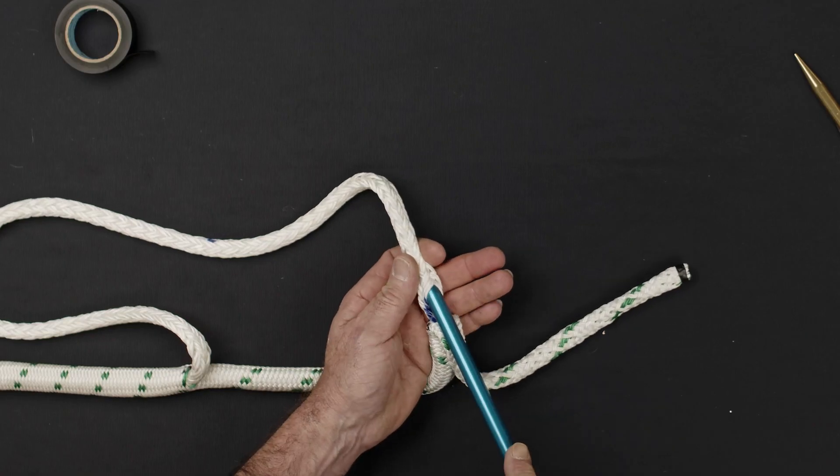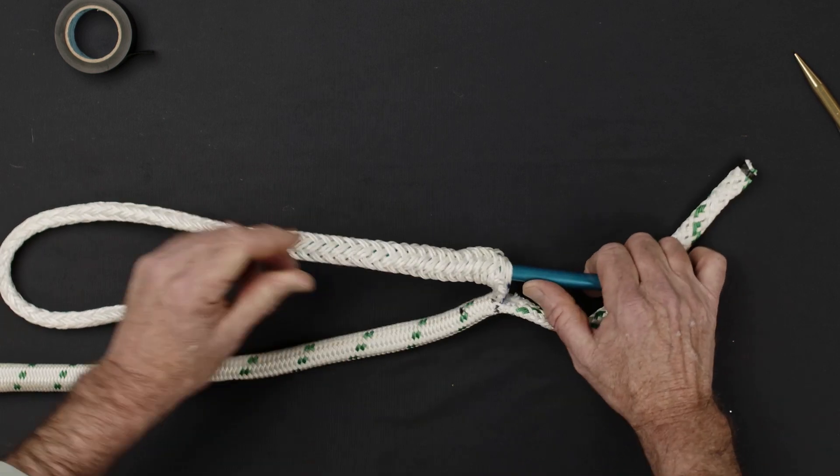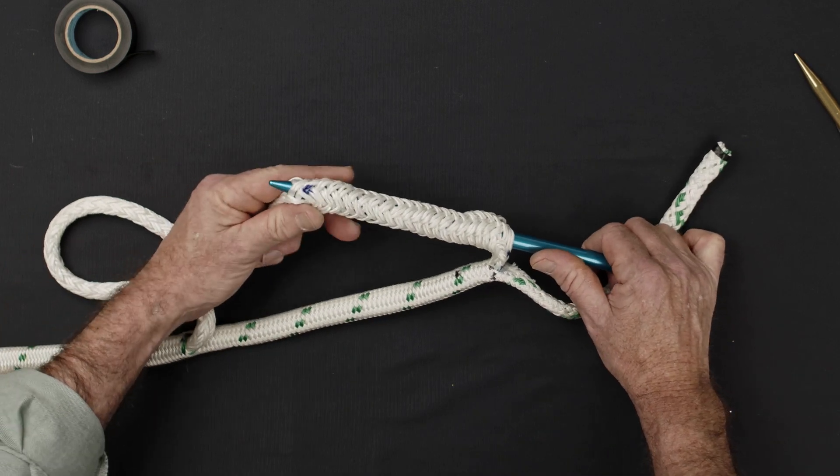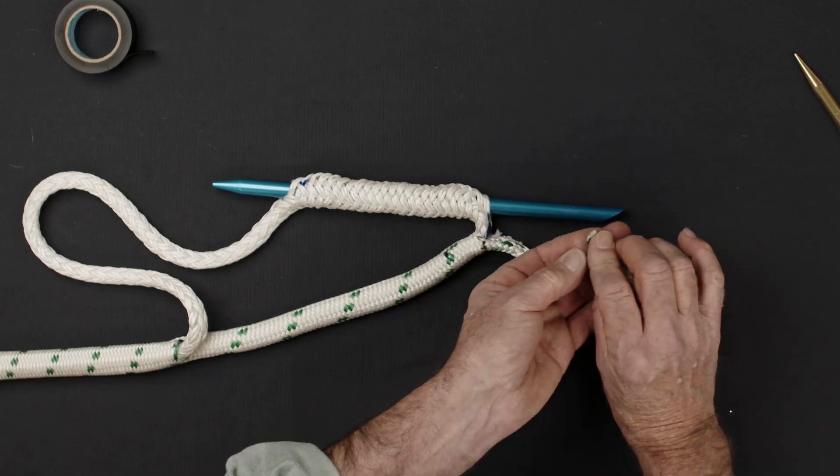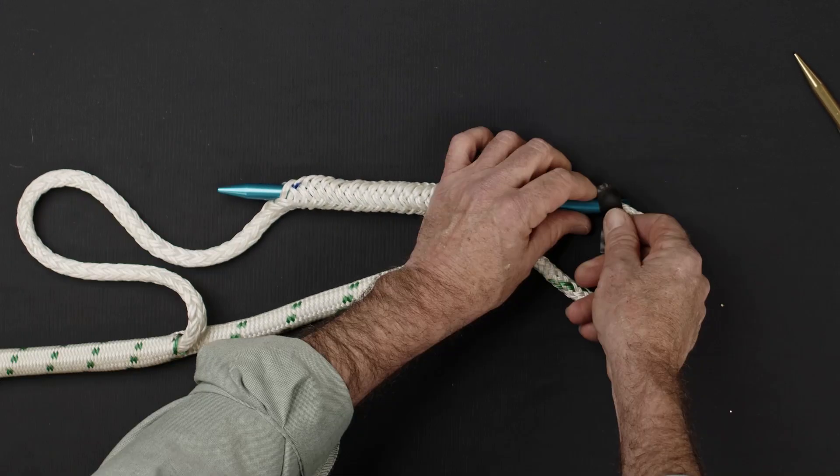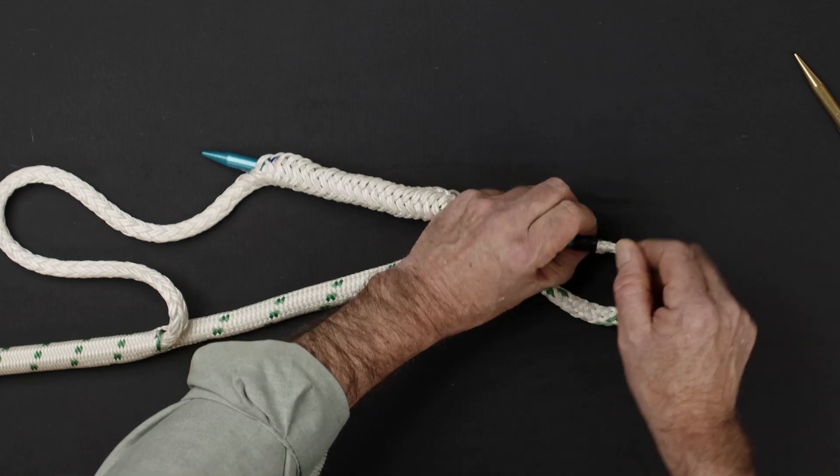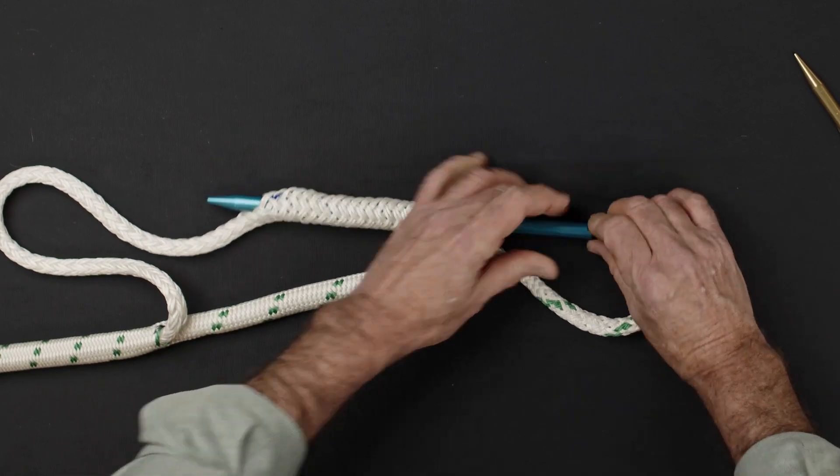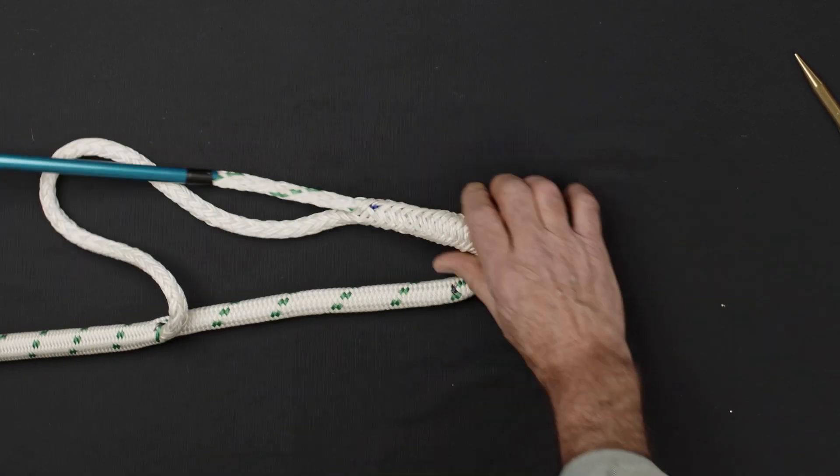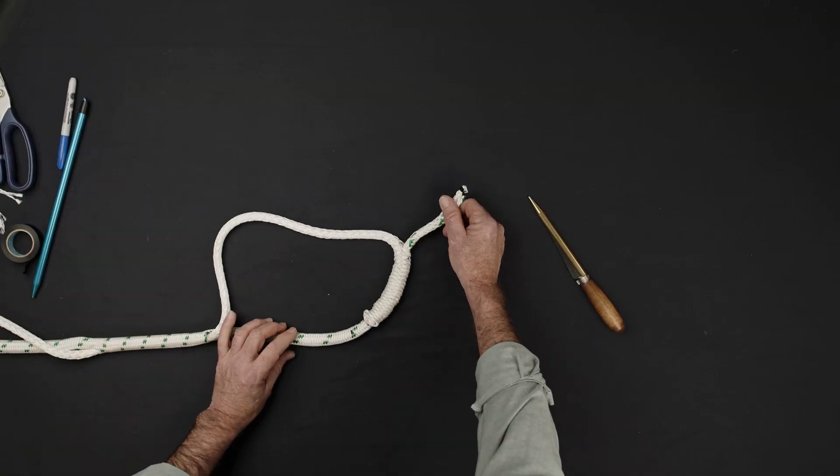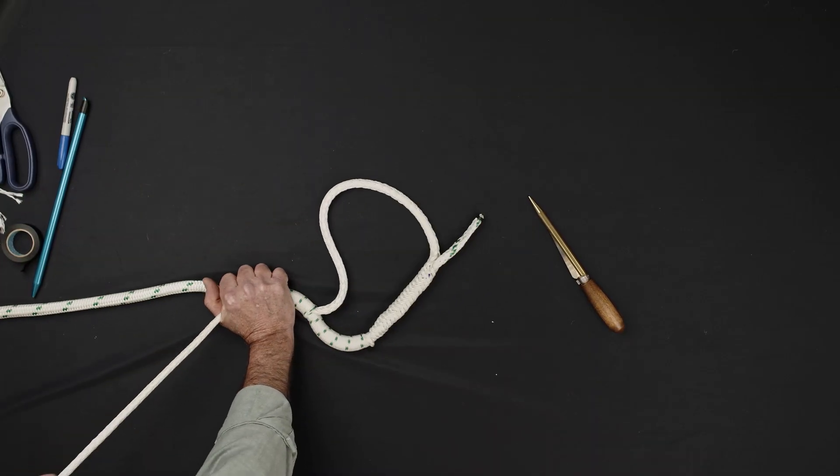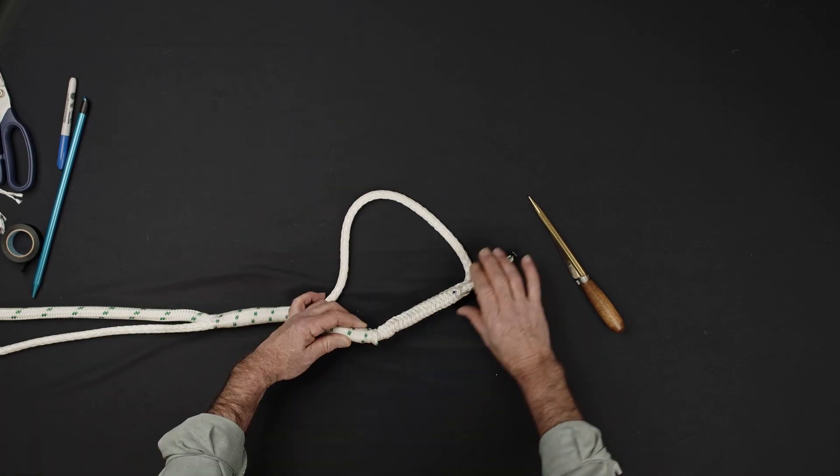From the alignment mark, insert your FID into the hollow center of the core and pass it out beyond the mark you just made. Tape the end of the sleeve into the back of the FID and pull the sleeve through. Pull on the end of the core and the end of the sleeve to tighten the crossover location.